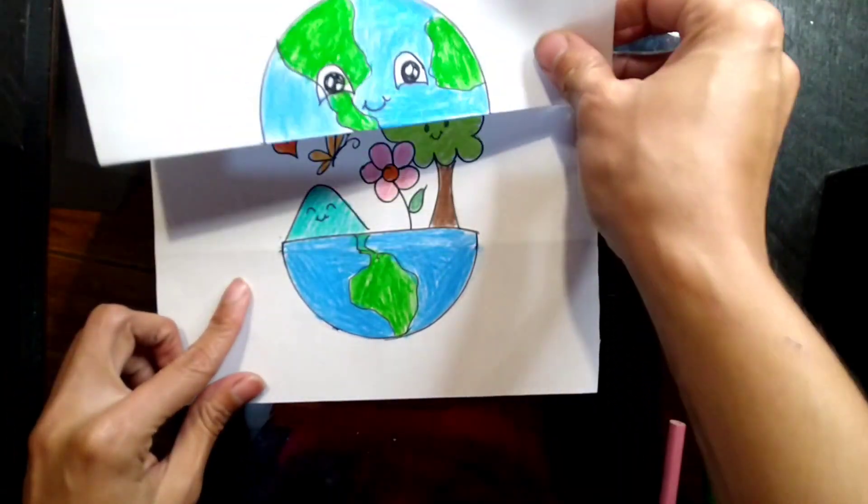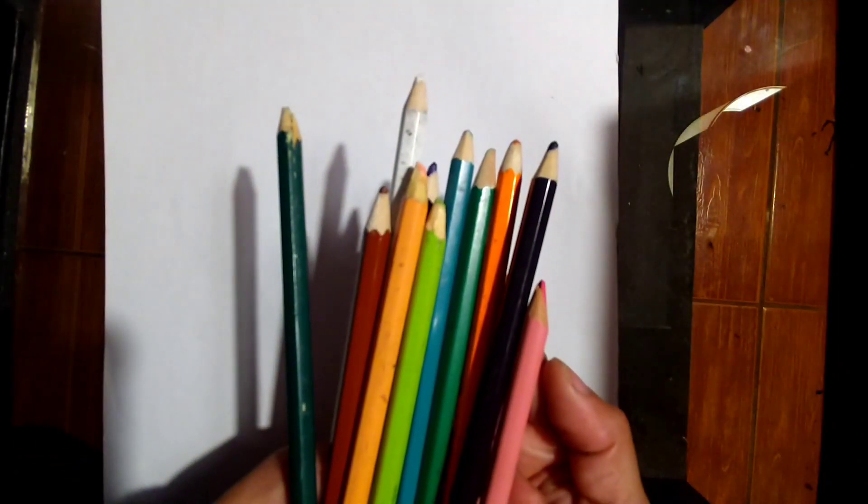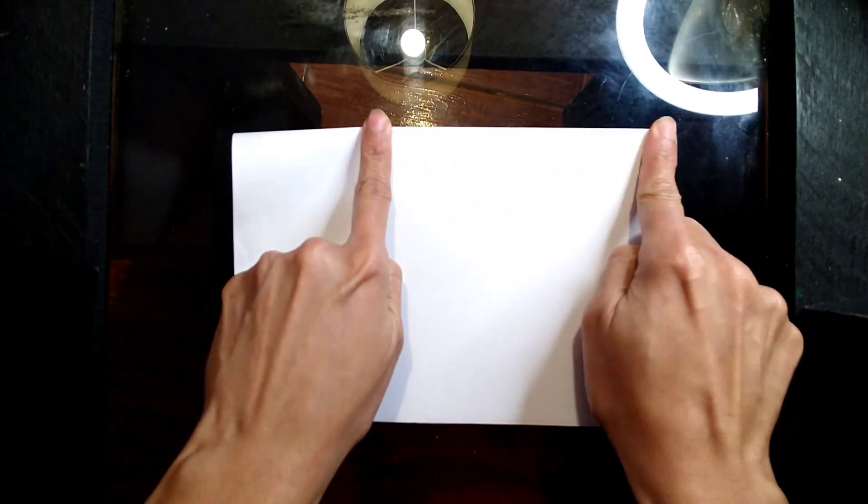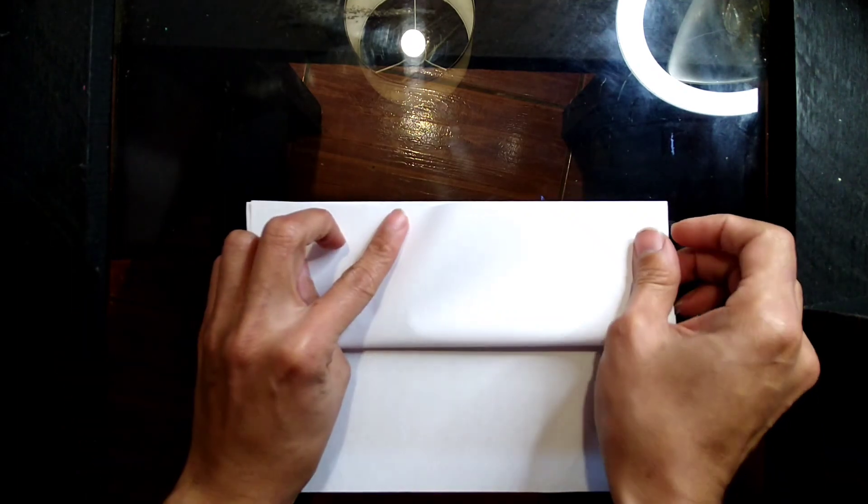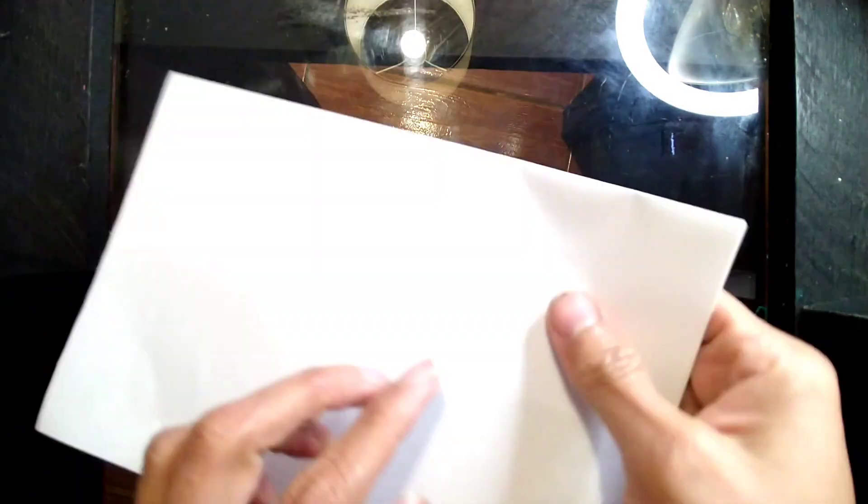Today we're gonna learn how to make a drawing that comes with a surprise. We're going to need paper and colors. First let's fold the sheet of paper in half, then one more time, flip it and do it again.